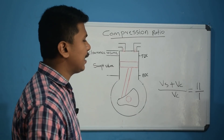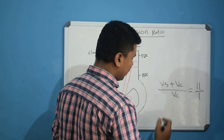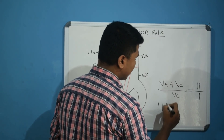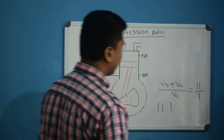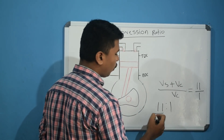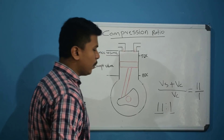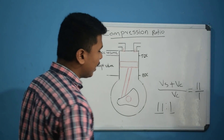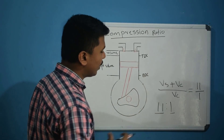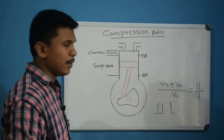The total volume is swept volume plus clearance volume. If you have a specific engine specification level, for example the LMS 5, that means the engine total volume divided by the clearance volume is the compression ratio. In other words, the piston sweeps through a volume that is a multiple of the clearance volume.